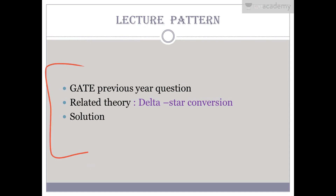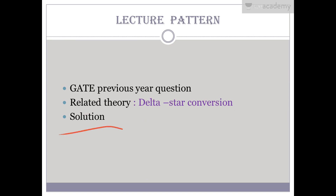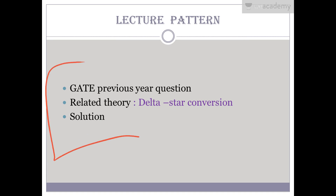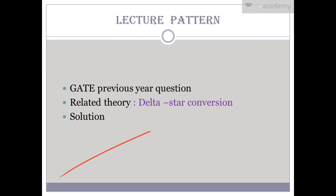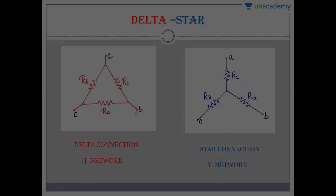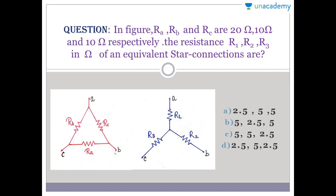Let me tell you something about the lecture pattern we are going to follow in this whole lecture. First we'll take a gate question — a two-mark question — then the related theory. The related theory according to the question is delta and star conversion. By the end of the lecture we will solve this particular question. This pattern is very beneficial for day-to-day study as well as if you're preparing for any exam, because it allows quick revision.